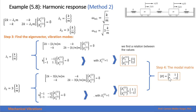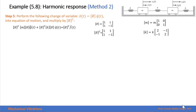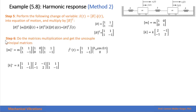We perform the change of variable: the generalized coordinate equals the modal matrix times the principal coordinates. We introduce this into the equation of motion and multiply both sides by the transpose of the modal matrix. This is the modal matrix we found, and this is its transpose — in this case, both are equal. After carrying out the matrix multiplications, we obtain the mass matrix and stiffness matrix in principal coordinates.